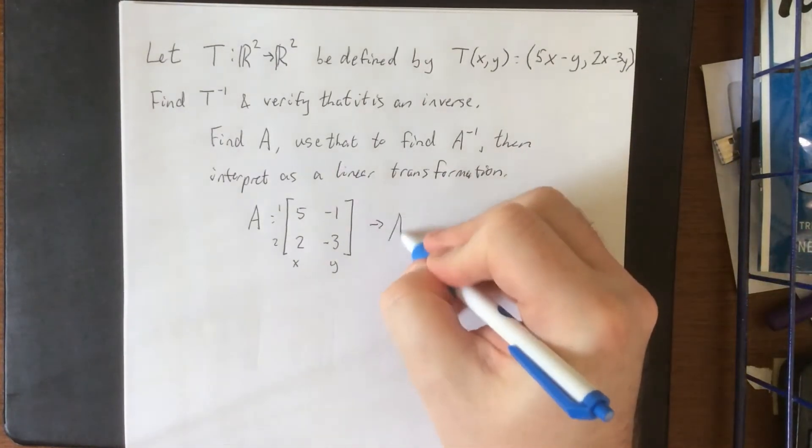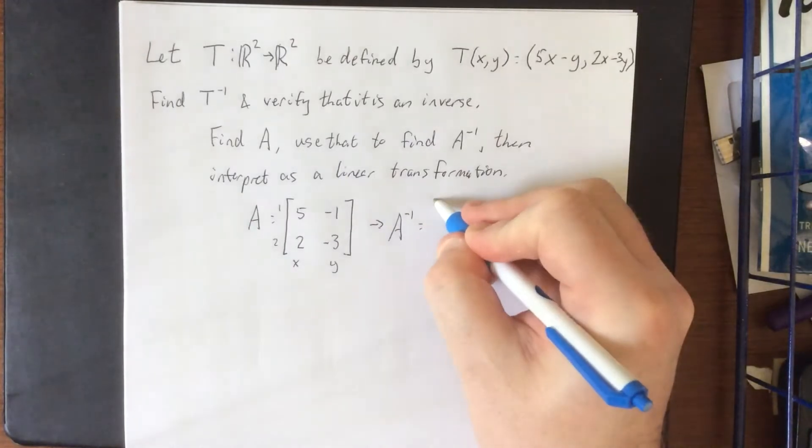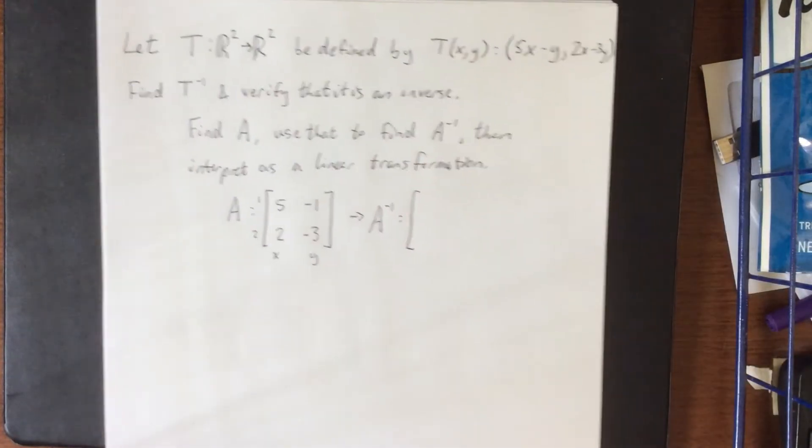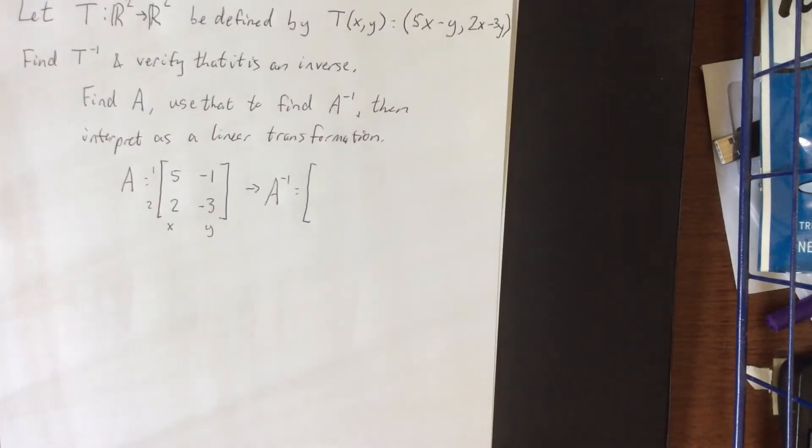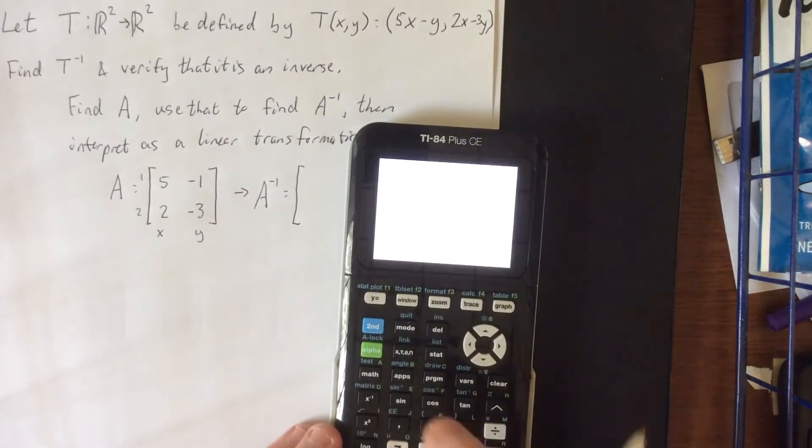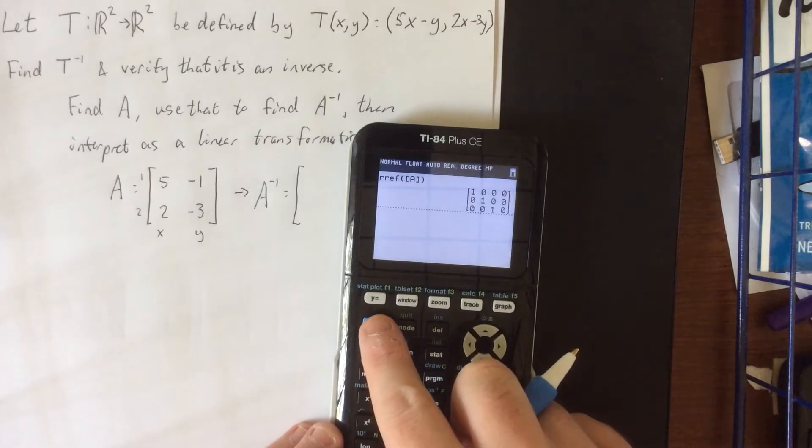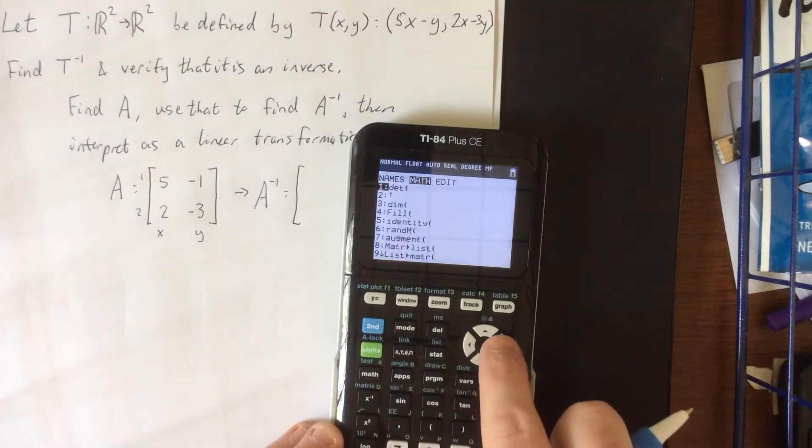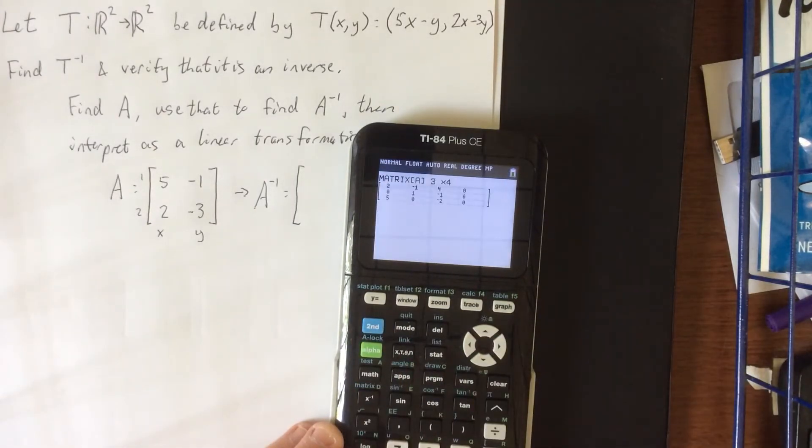Now we want to turn this into an inverse matrix. I'm not saying I'm feeling lazy today, but what I am saying is that technology is awesome and we should make use of it whenever we can. So entering the matrix menu, I'm going to edit a 2×2 matrix and input it exactly as is: 5 negative 1, 2 negative 3.